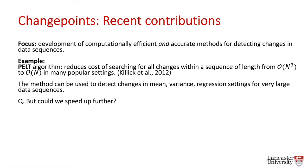How can we search through this space efficiently and accurately? This was one of the early focuses for us at Lancaster, resulting in the PELT algorithm — the Pruned Exact Linear Time algorithm — published in 2012. PELT reduces the cost of searching for all changes within a sequence from an order n-cubed operation to an order n operation, making some slight assumptions that are reasonable for many popular settings. The method can be used to detect changes in mean, variance, regression, and many other scenarios.